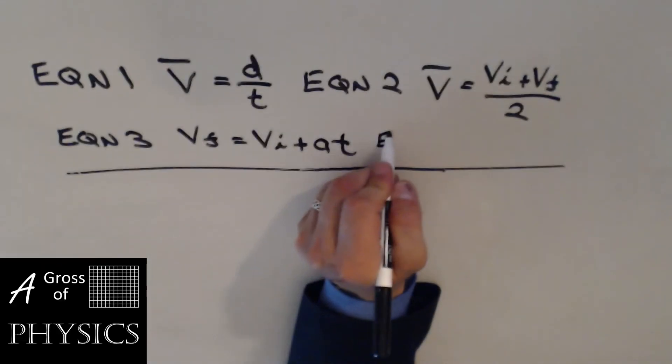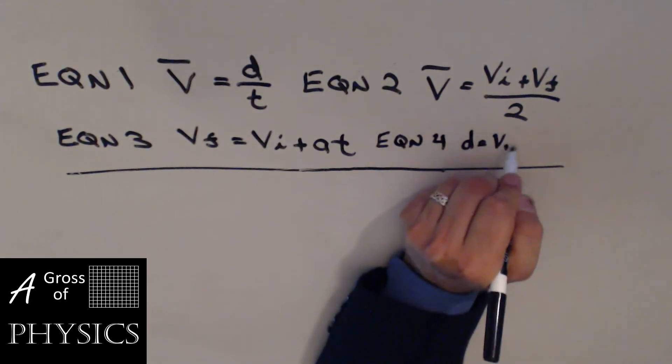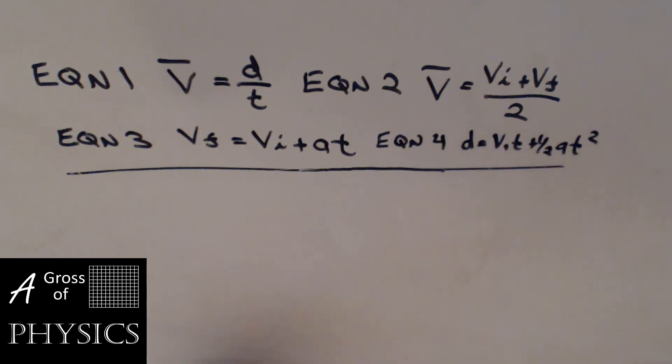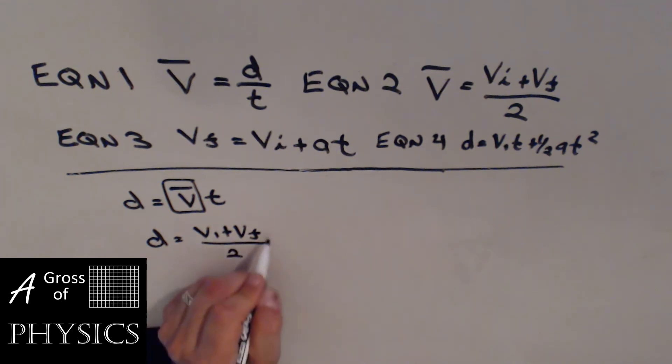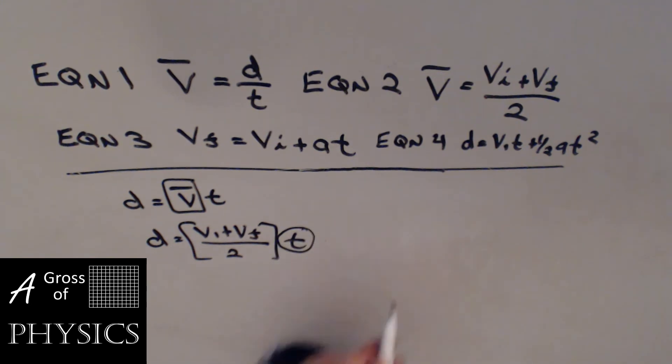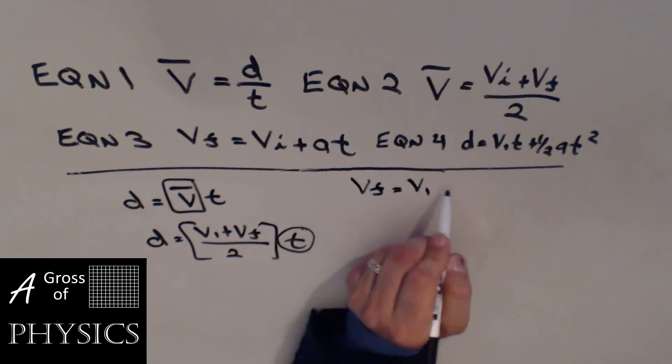Now we have equation 4, which is D equals VIT plus 1 half AT squared. We need to find out where equation 5 comes from. We're going to take equation 1 and solve it for D. D equals V bar times T. Then take equation 2 and replace the V bar. D equals VI plus VF over 2 times T. Equation 5 doesn't have time in it, so we're going to try to eliminate the time. We do that by solving equation 3 for T. VF equals VI plus AT, so we're going to subtract the VI over and divide by A.